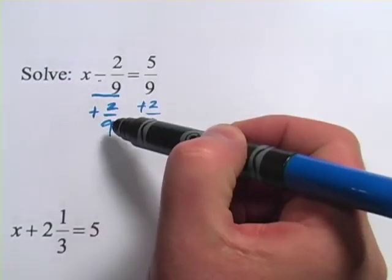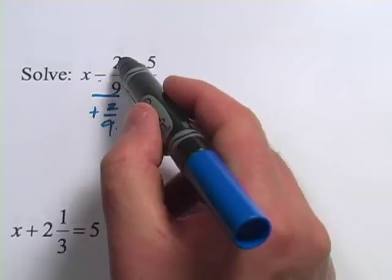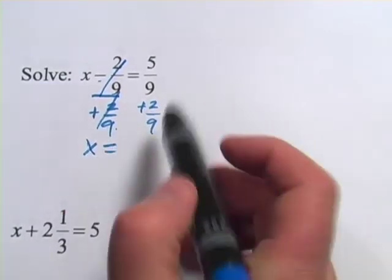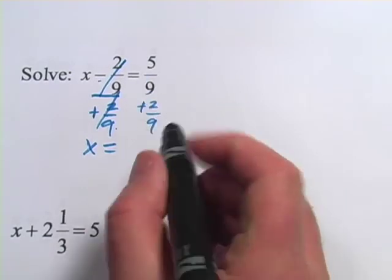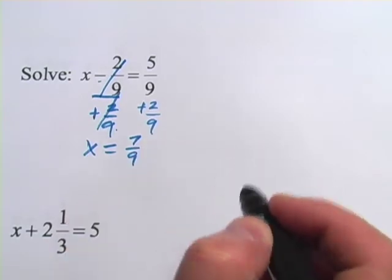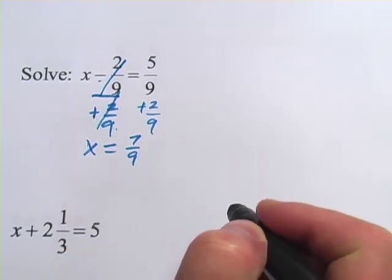So a negative 2 ninths plus 2 ninths, well that's just zero. So that leaves x all alone, which is what we want. And now we have 5 ninths plus 2 ninths, well they're same denominator so we just add the 5 and the 2 and that is 7 ninths. And that's our answer. We've solved for x.